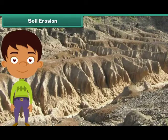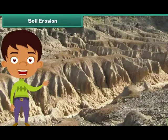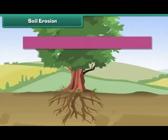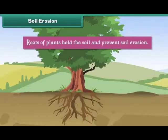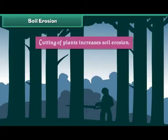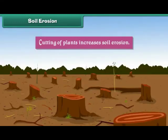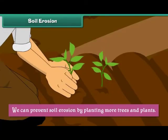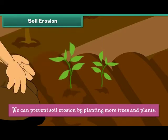Soil Erosion. Soil erosion is the removal and transfer of soil by wind and water. Roots of plants hold the soil and prevent soil erosion. Cutting of plants increases soil erosion. We can prevent soil erosion by planting more trees and plants.